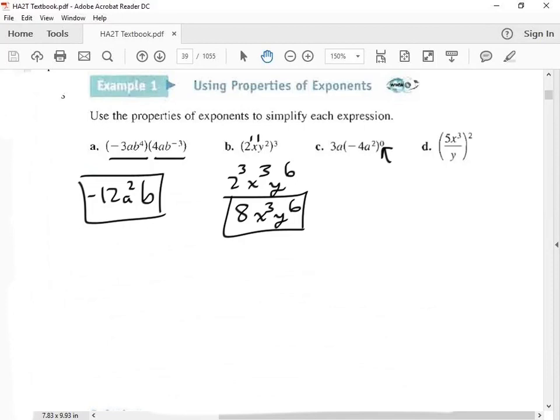The next one, we have a zero exponent. Whenever you have a zero exponent, whatever is being raised to the zero power simply equals 1. So this whole thing just equals 1. 1 times 3a is just 3a. And then finally we have a parenthesis exponent with a fraction. The same thing as this one. You multiply the parenthesis exponent to all the inside exponents. So there's a 1 in there. So we get 5², x⁶, and then you have y². 5² can be simplified, so we write 25x⁶ over y².